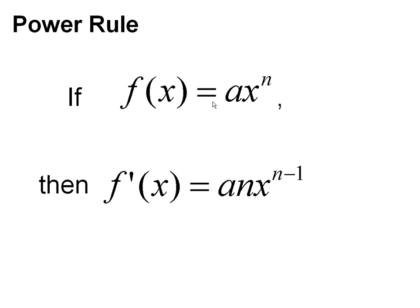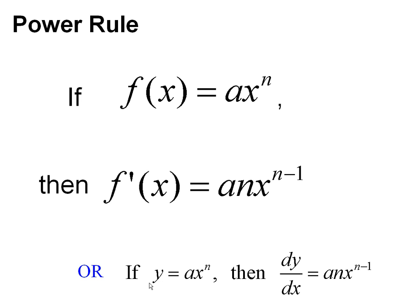If you have a function ax to the n, the derivative of that is anx to the power of n minus 1. Written in the other notation, you can write it like that. The function is y, the derivative is dy/dx. What's happened? This n has come down the front, and then it's been reduced by 1.